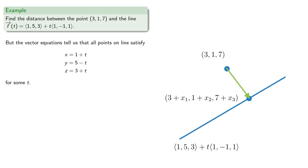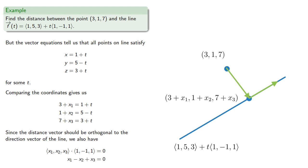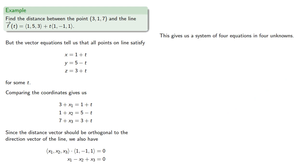Comparing the coordinates gives us... Now since the distance vector should be orthogonal to the direction vector of the line, the dot product should be 0. This gives us a system of four equations in four unknowns.